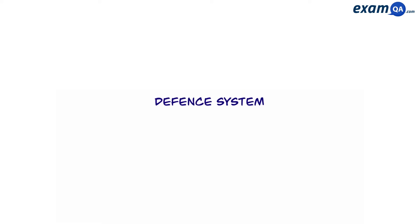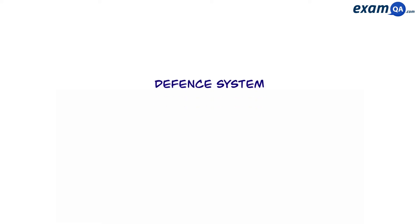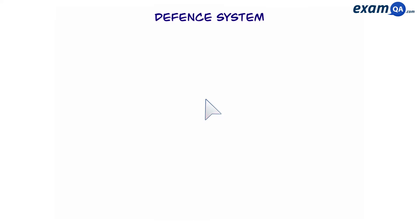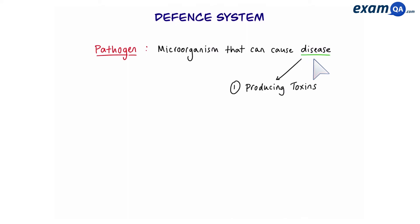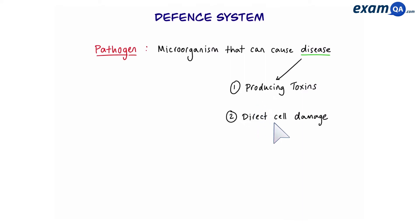In this video we're going to be learning about the defense system of our body. Our body needs to defend itself from pathogens. These are microorganisms that can cause disease. The disease arises either from toxins being produced by the pathogen or direct cell damage by the pathogen to our cells.